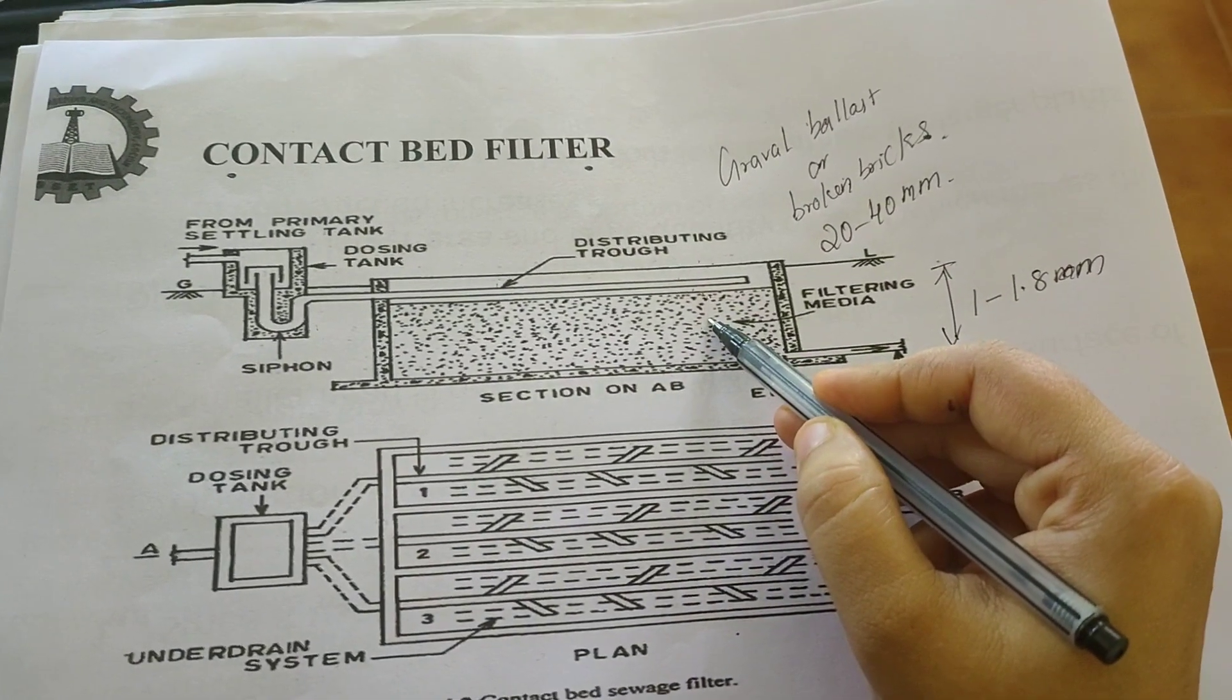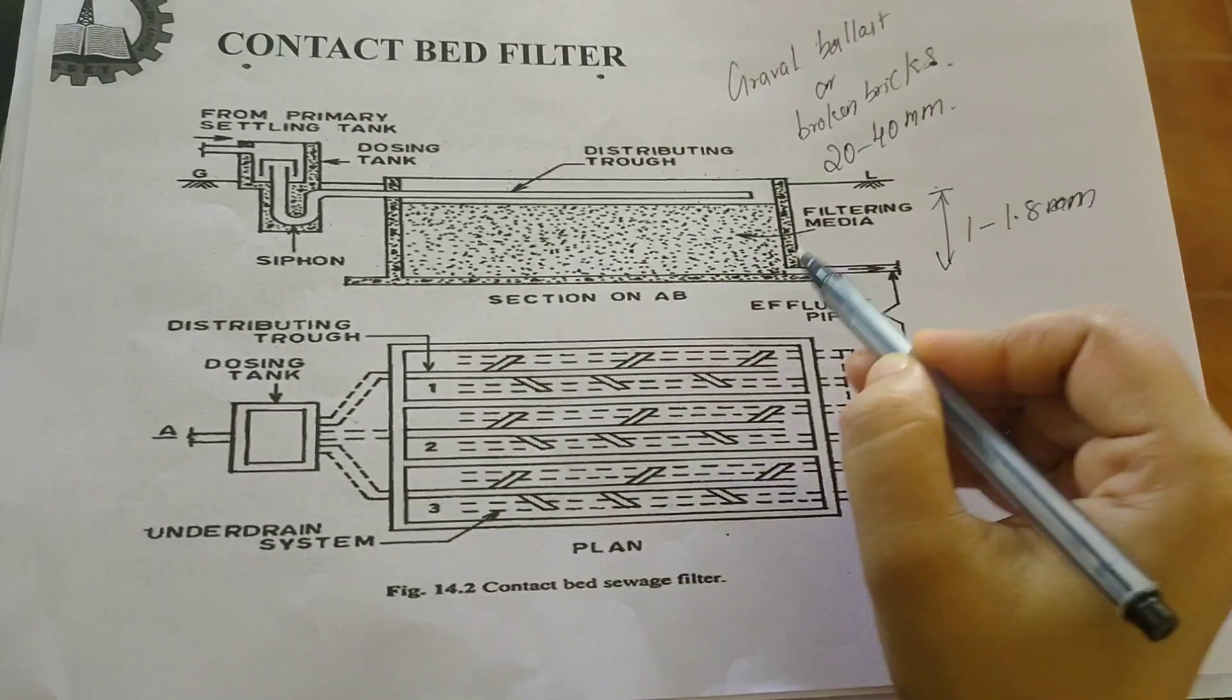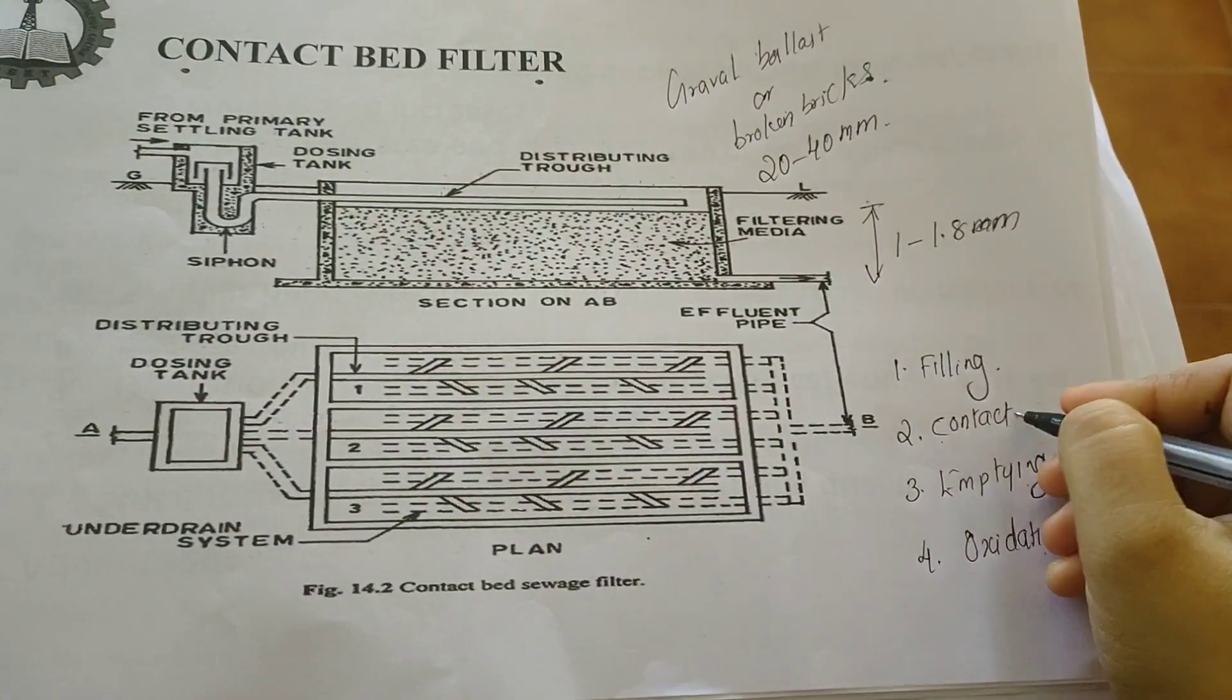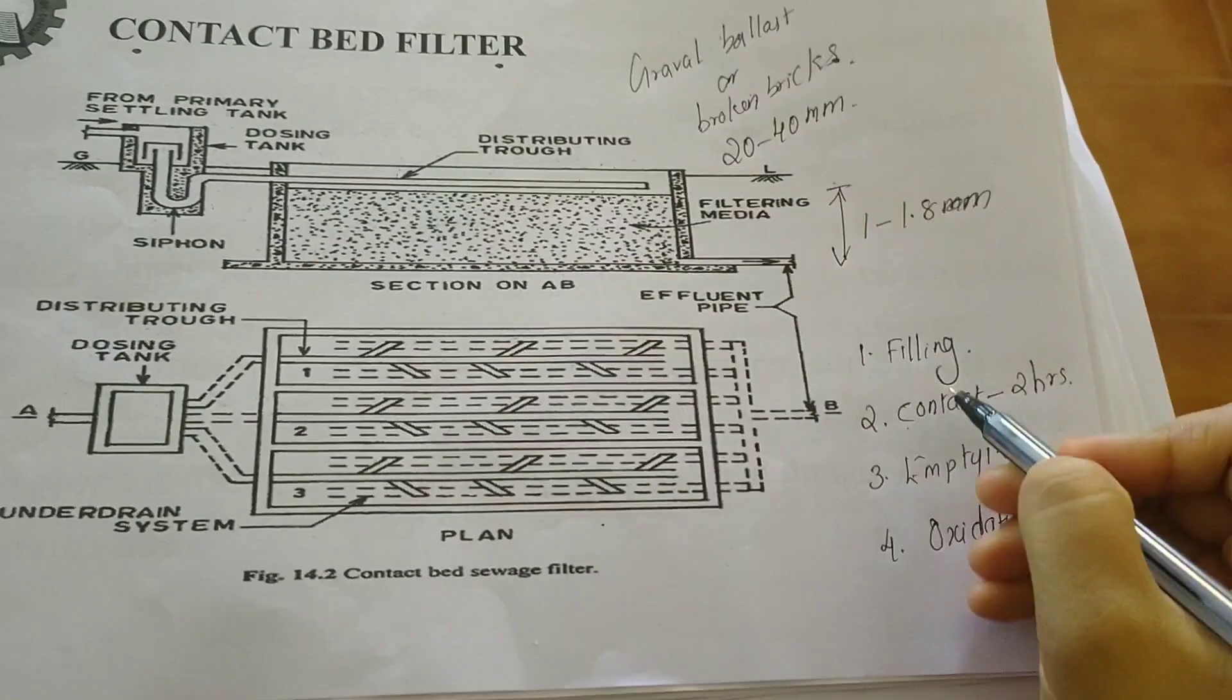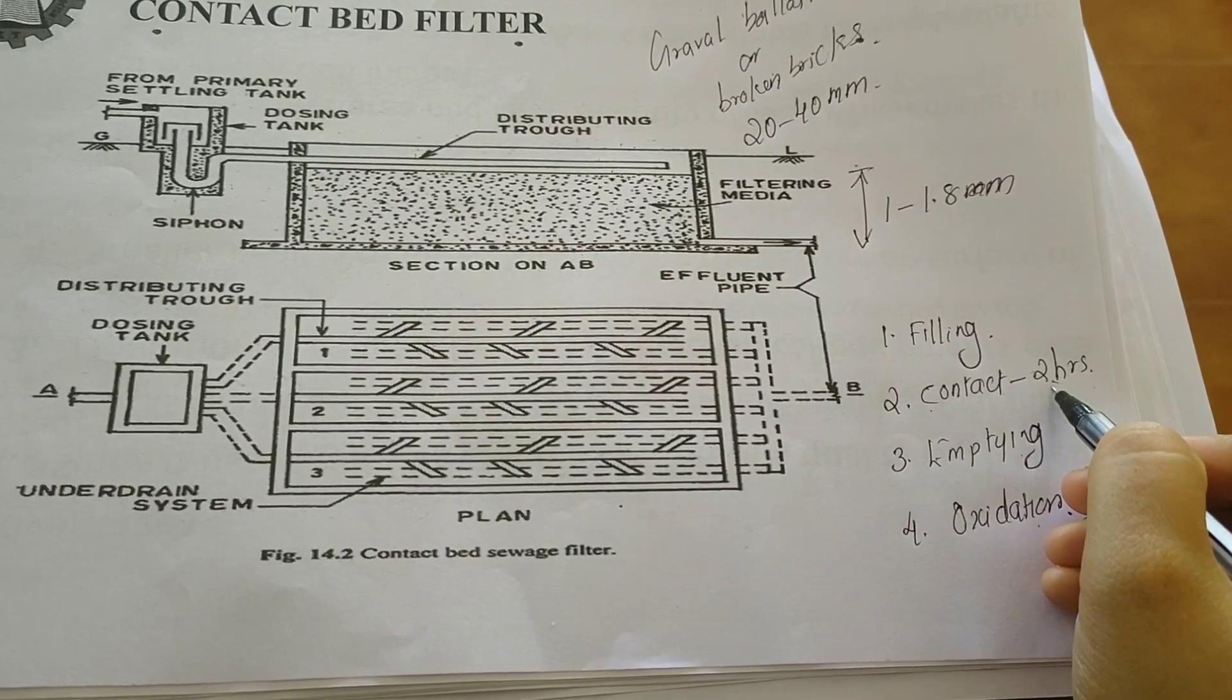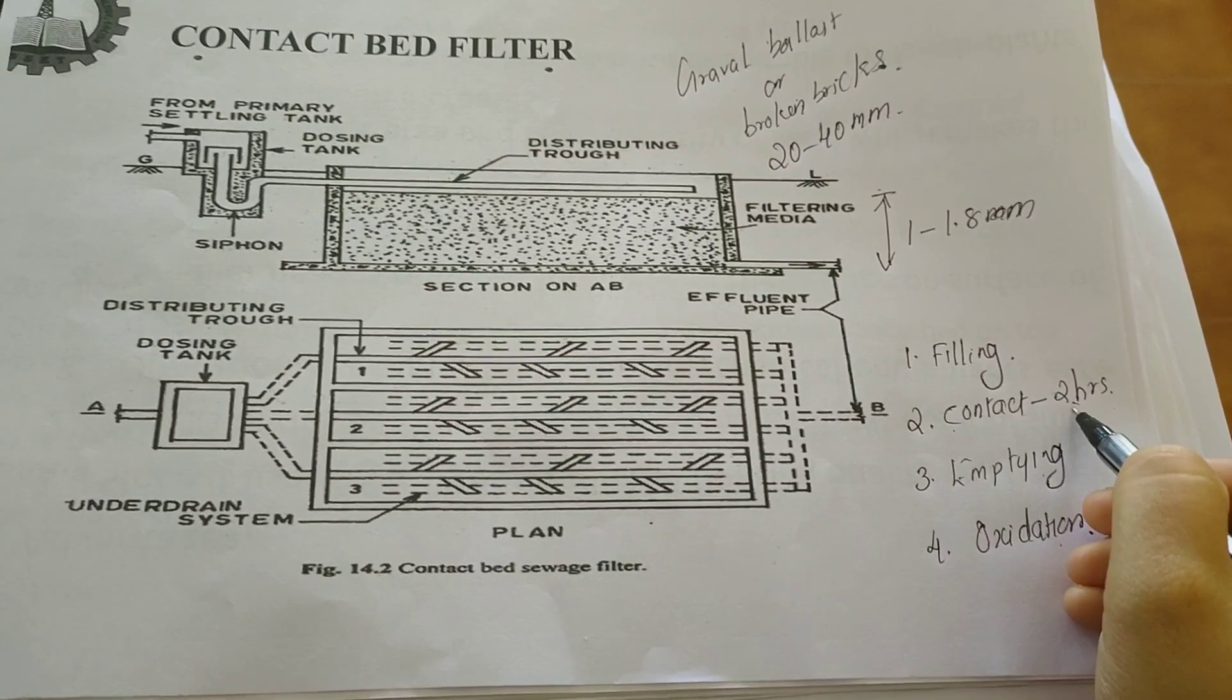Now the second phase is the contact period. In this period the dosing tank will be closed. The sewage will stand for about 2 hours, and these hours are known as the first contact period. In this period the colloidal and dissolved matter gets transferred to the filter media and be in contact with bacterial filling.